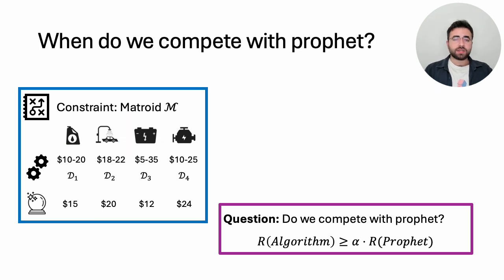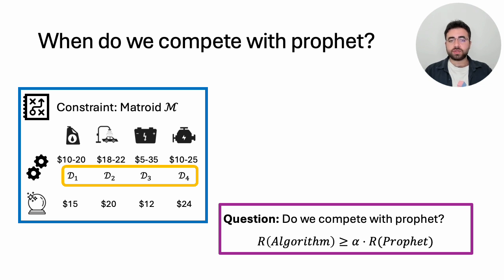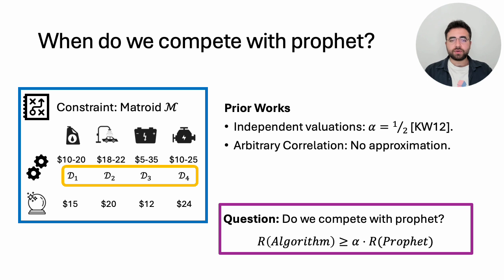We start discussing our results by raising the question: when do we compete with the prophet? We will focus on assumptions on distributions — not on individual distributions, but on different types of correlations across them. This problem was initially studied under the independent distribution assumption, where a well-known result of Kleinberg and Weinberg shows a half-competitive prophet inequality exists. However, for arbitrary correlations there is no hope of achieving any approximation, even for the classical setting.